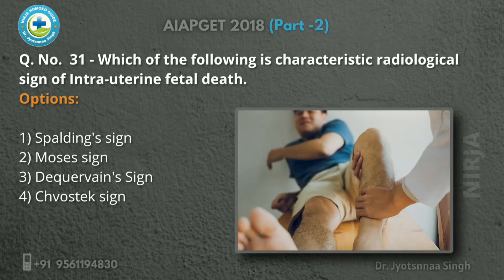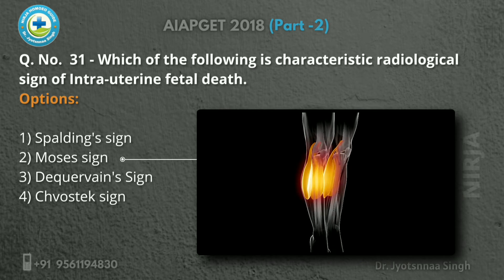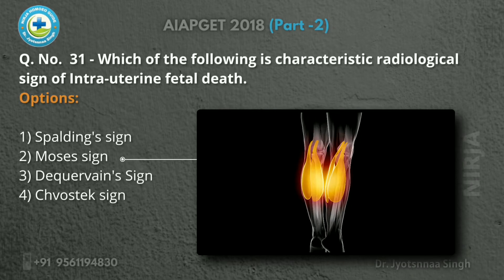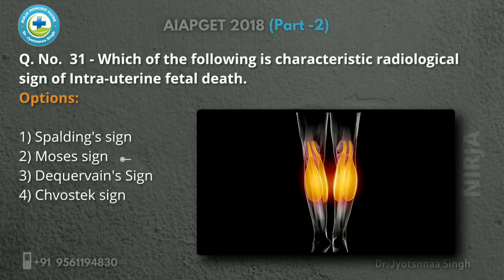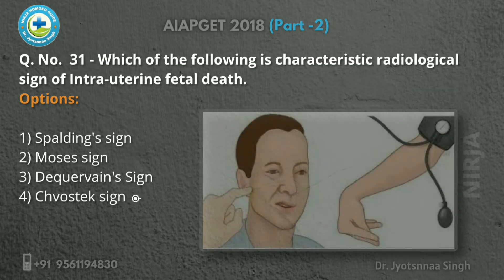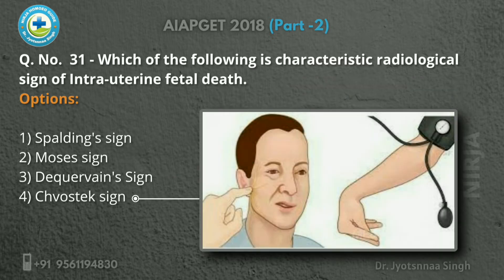The next option is Moses sign, also known as the bankrupt sign, which is seen in deep vein thrombosis of the lower leg. Next option is the equivalent sign — there is pain and swelling near the base of the thumb. The next one is Chvostek sign, which is a twitching of facial muscles in response to tapping over the area of the facial nerve.